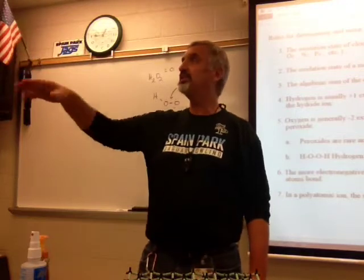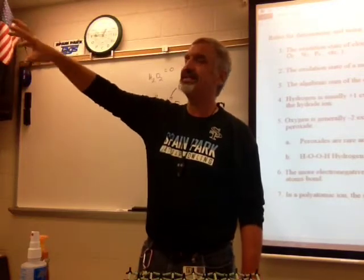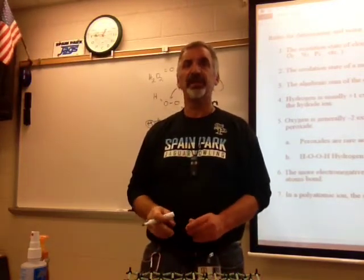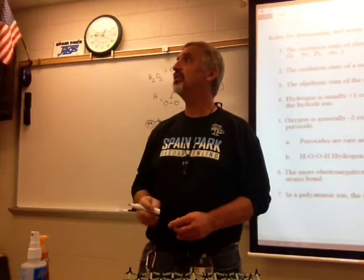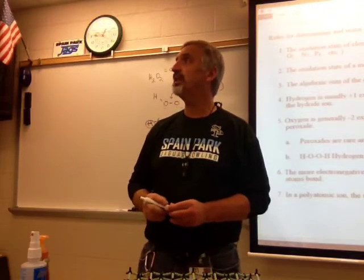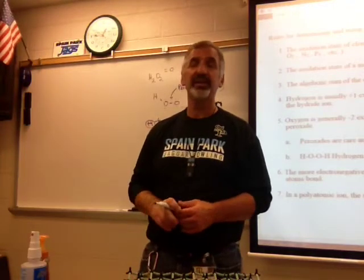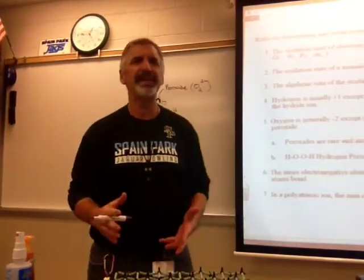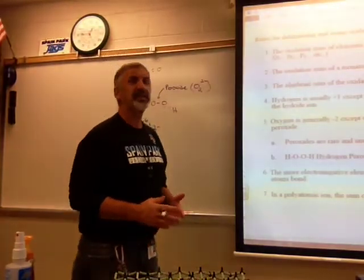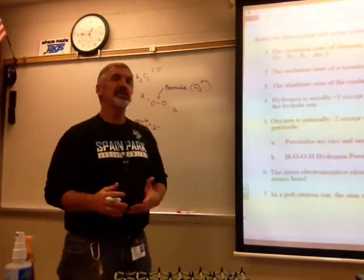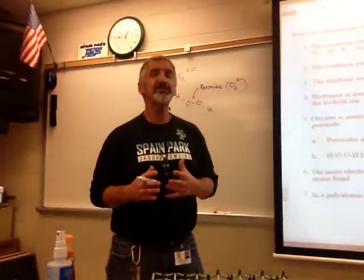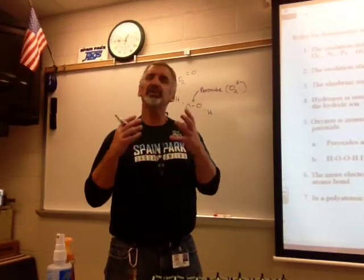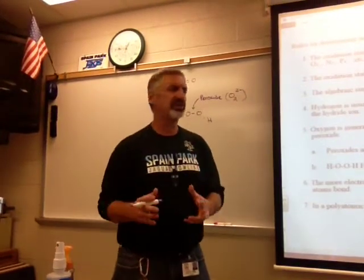On the periodic table, the little number above the symbol tells us the oxidation number for every element. Most only have one number. However, many non-metals have a variety of different oxidation states — chlorine, for instance, can be plus or minus one, seven, five, or three. It's most important when we're sharing electrons.